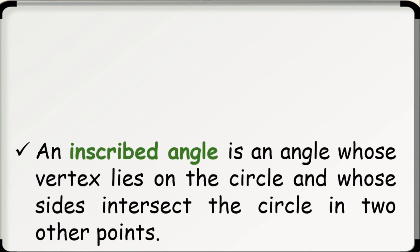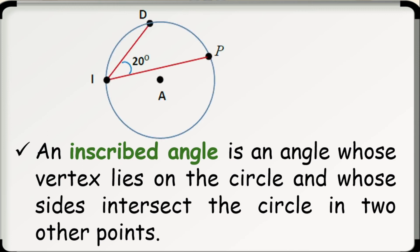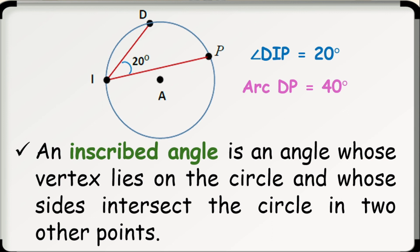Let's talk about inscribed angle. An inscribed angle is an angle whose vertex lies on the circle and whose sides intersect the circle at two other points. In circle A, angle DIP is an inscribed angle whose measure is 20 degrees, and its intercepted arc is arc DP. Take note that the measure of an inscribed angle is equal to one-half the measure of its intercepted arc, or the measure of the intercepted arc is twice the measure of the inscribed angle. Hence, arc DP is 20 times 2, which is 40 degrees.